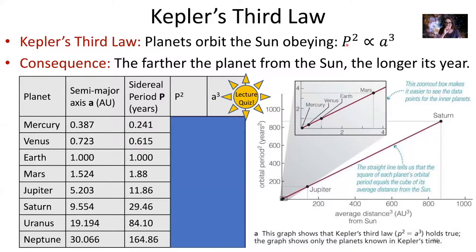The orbital period is how long it takes the planet to go around the sun once. A is the semi-major axis — essentially the distance between the center of your ellipse and the edge of the ellipse on its most elongated side. So the orbital period squared is proportional to the semi-major axis cubed.